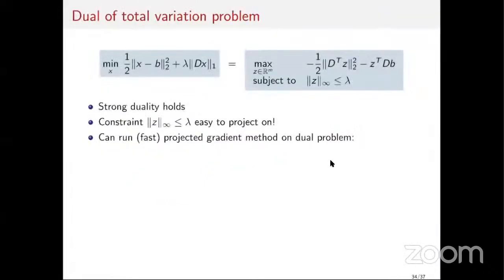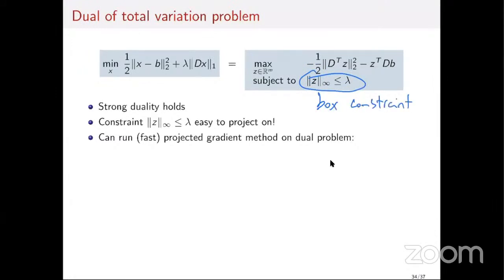We have strong duality because f is convex and defined everywhere, so Slater's condition is satisfied. My original minimization problem equals the maximization of the dual. The key point is that the dual optimization has a very simple form: maximize a quadratic subject to a box constraint (the infinity norm constraint ||z||_inf ≤ lambda). Projecting onto a box is very easy — if z_i > lambda, bring it to lambda; if z_i < -lambda, bring it to -lambda.